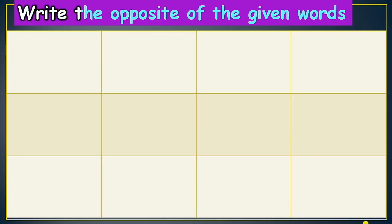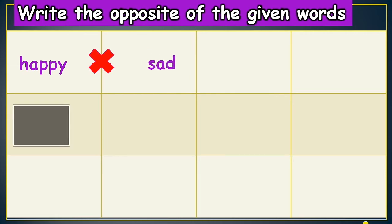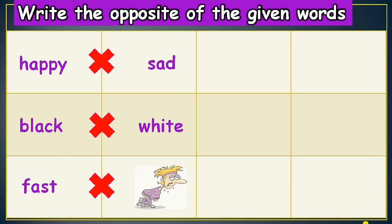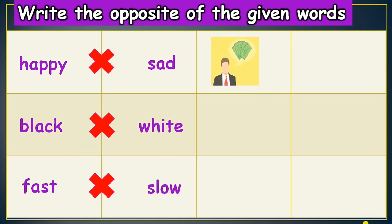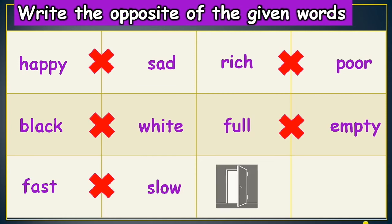Next activity: write the opposite words of the given words. Happy — its opposite is sad. Black — its opposite is white. Fast — its opposite is slow. Rich — its opposite is poor. Full — its opposite is empty.